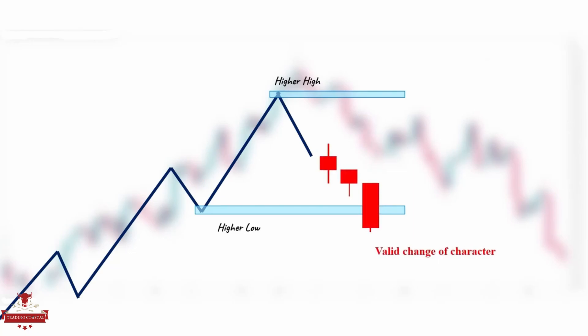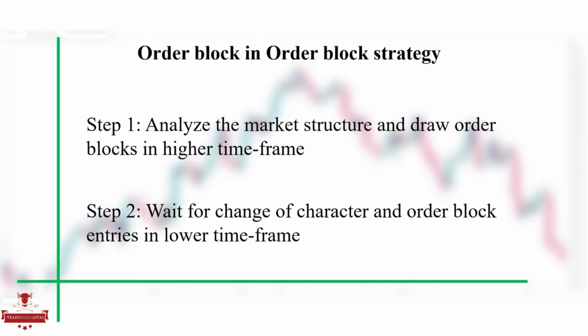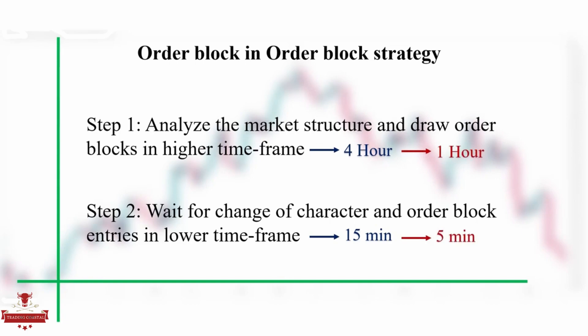Now that we discussed the concepts of smart money, let us dive into one of its top strategies. This strategy has two steps. First, we analyze the market structure and point out order blocks in the higher time frame. Second, we zoom into a lower time frame and wait for a change of character to appear, then look for order block entries. For example, if we have pointed out our order blocks in 4 hours, we look for entries in 15 minutes. With the same concept, if the higher time frame is 1 hour, we look for entries in 5 minutes. Remember that this strategy is not limited to any time frame, but your entry time frame must be at least 2 times lower than your analysis time frame.